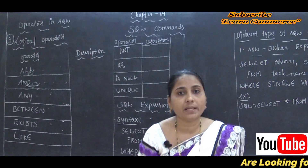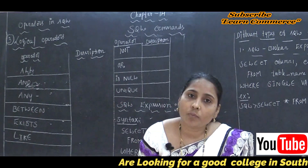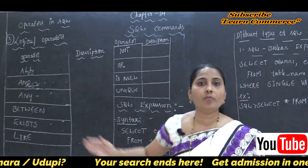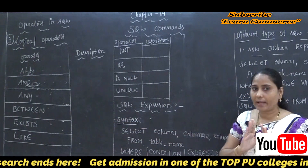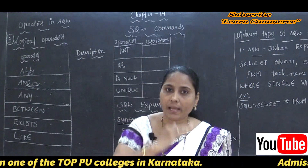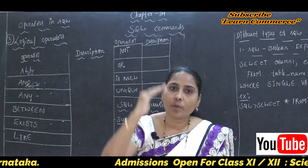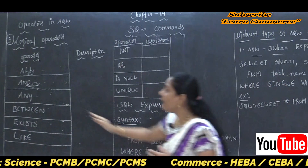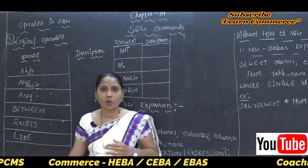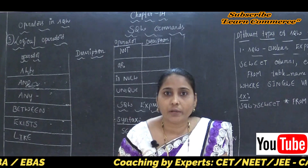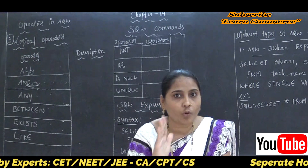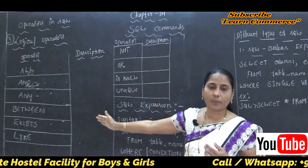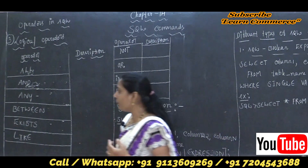The next operator is called the ANY Operator. The ANY Operator is used to compare a value to any applicable value in the list. That means we are not going to compare all values from one set to another set. Maybe if any value is going to be compared from one set to another set, such comparison can be performed using the ANY Operator.